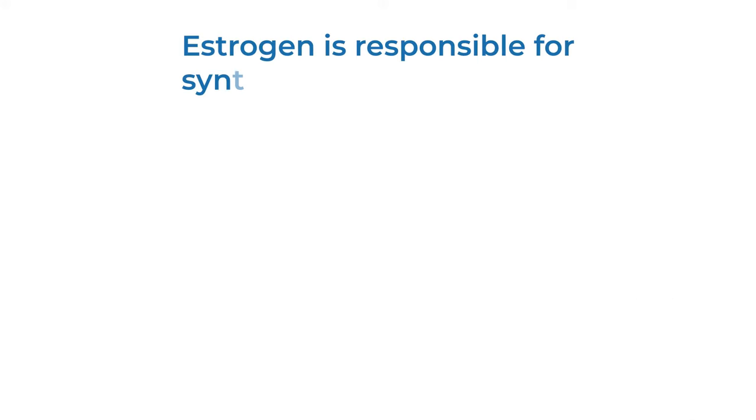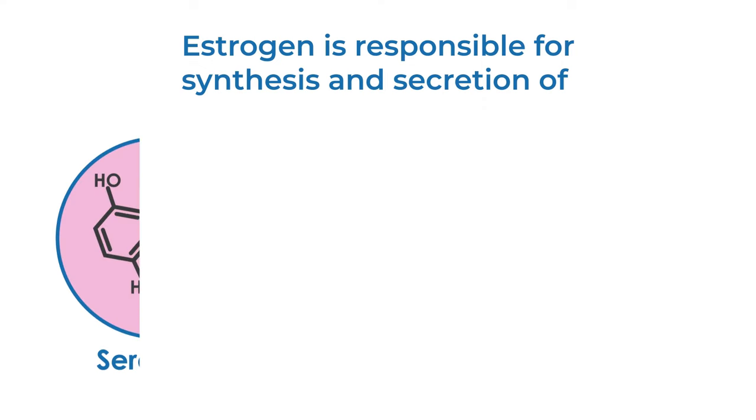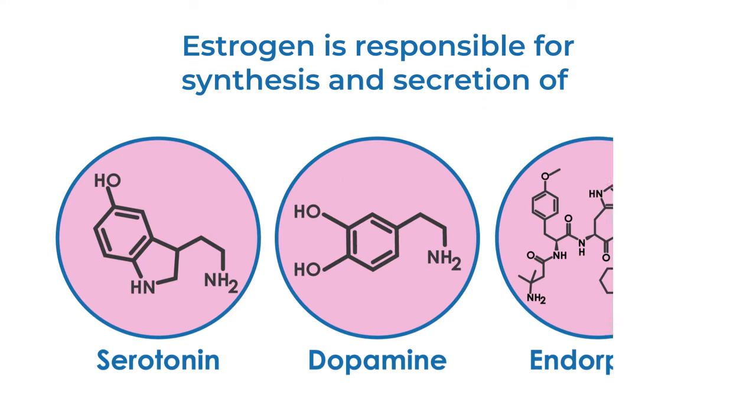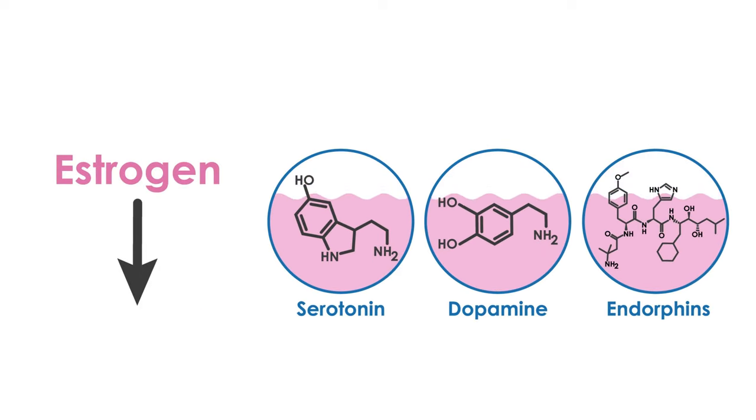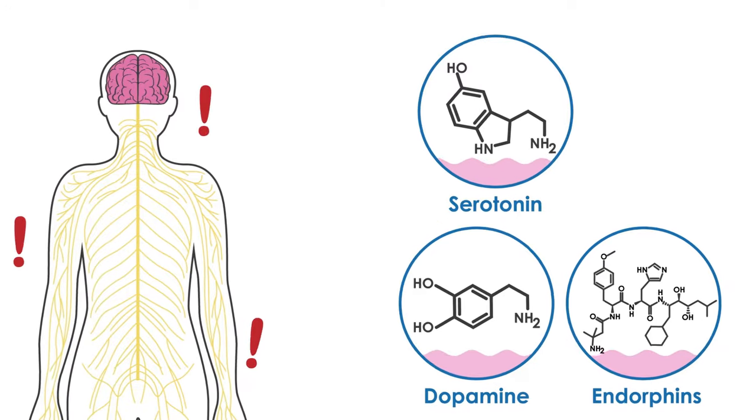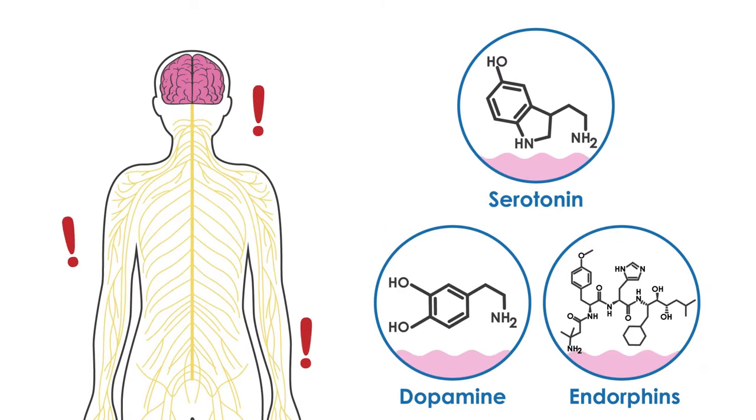It is attributed to falling estrogen levels that occur with menstruation. Estrogen is responsible for synthesis and secretion of chemicals that help stabilize our bodies such as serotonin, dopamine, and endorphins. When estrogen levels fall, levels of chemicals also fall and cause pain sensitivity to increase throughout the nervous system.